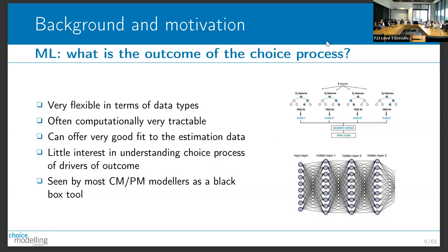Everyone is now talking about machine learning. To put it simply, what machine learning is really interested in is the outcome of the choice process - not how or why people make choices, but just what is the outcome. These models can be used on very complex data and are often more computationally tractable than our traditional models, but traditional choice modelers and people in psychology can see these as black box tools where we have no idea what happens under the hood.